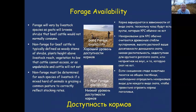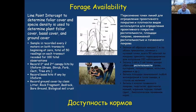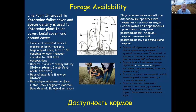We can calculate stocking rate in an Excel spreadsheet that takes mixed species into account. For forage availability, we are concerned about plant cover. We lower the pin straight down, and the first time we hit a plant we record it. Any hit on the plant — stem or leaf — is recorded as a foliar hit.